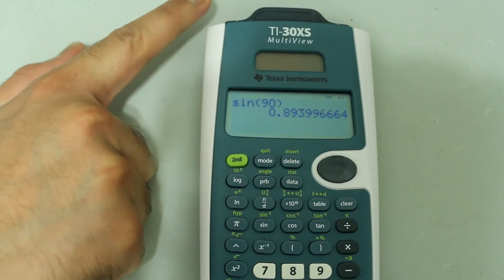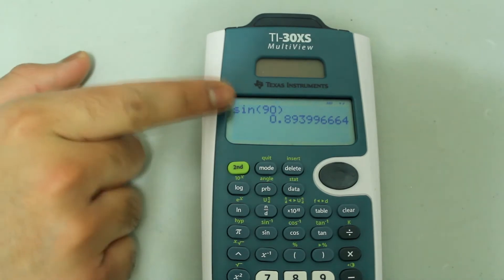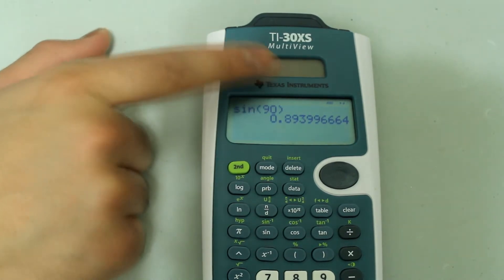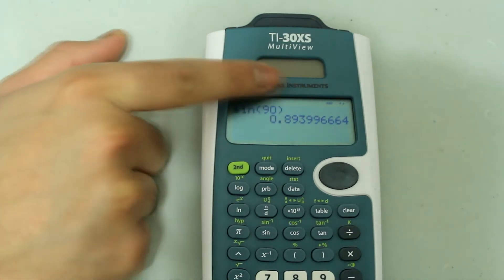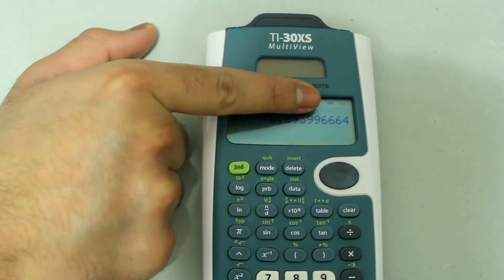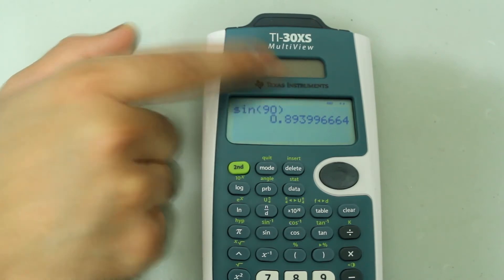And the reason this happens is that my entry is in degrees while the calculator is in radian mode. And I can tell that the calculator is in radian mode by looking at the upper right corner of the screen where it says RAD for radian.